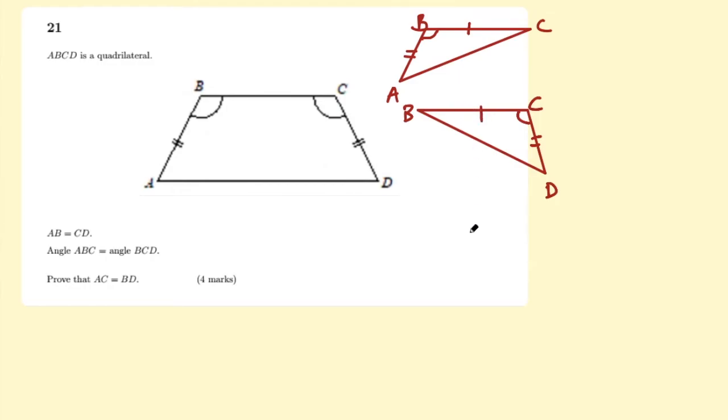And there's a rule of congruence that says if we have a side, an angle and then a side the same, in other words, if you flip this triangle over, it will look exactly the same as ABC because we have that side equal, the angle in between and the other side equal.